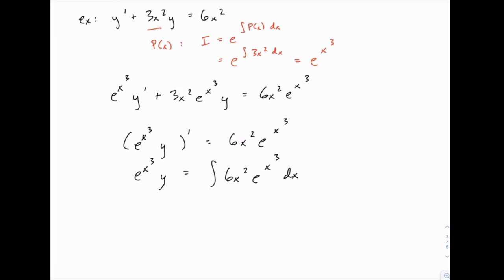It's really just a simple u substitution problem where if we let u equal x cubed, du equals 3x squared dx. When we make the substitution, 6x squared is 2 times 3x squared, so we'll have 2 e to the u du. Once we get to that point, integrating is fairly simple. We just get 2 e to the u plus c.